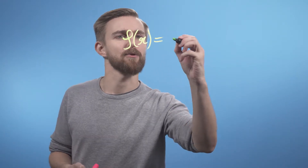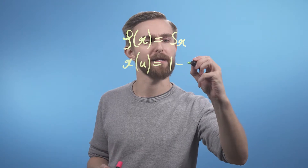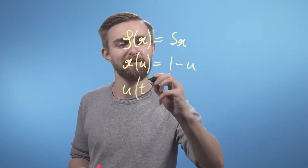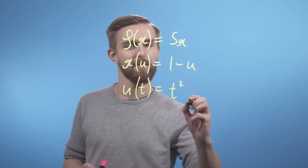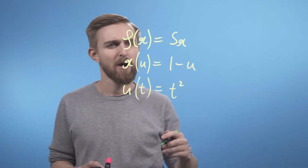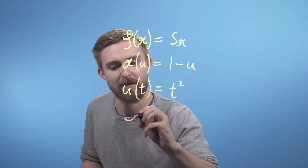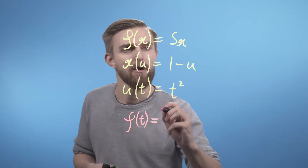Next, we're going to see that the chain rule still works for more than two links. To start us off, we'll work through a really quick univariate example, where we're going to add in another function separating f from t. So we can say f of x is going to equal 5x, and we can have x of u equal 1 minus u, and u of t equal t squared. So we've got three functions, separating f from t by an extra step. Of course, we can just sub in each step into each other and find an expression for f as a function directly of t.